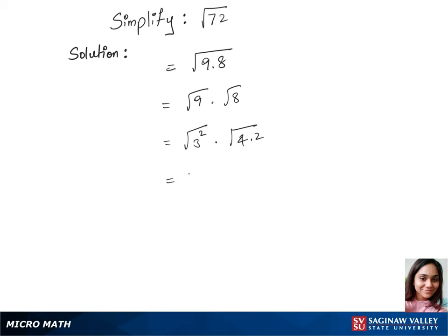In our next step, the square root and square get cancelled, and that gives us 3 times. Let's separate the root here by writing root 4 times root 2. Now we have 3 times root 4 as 2, because 4 is 2 squared and square and square root get cancelled, times root 2. Let's multiply now: 3 times 2 is 6 times root 2.